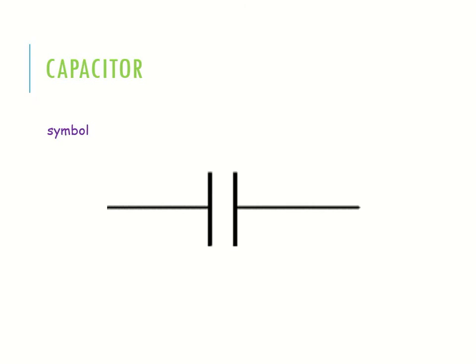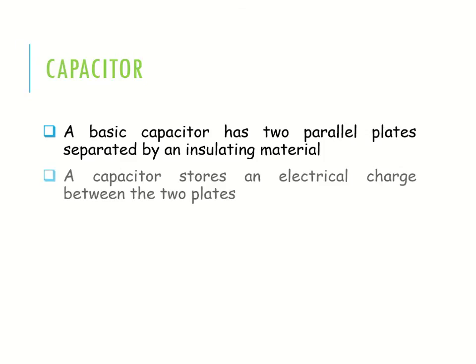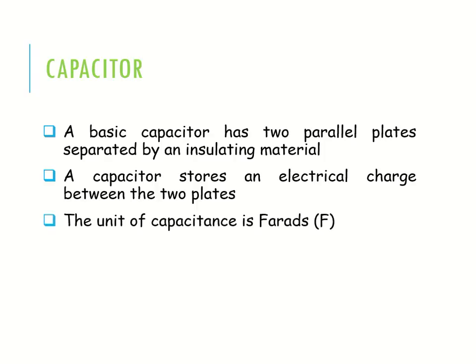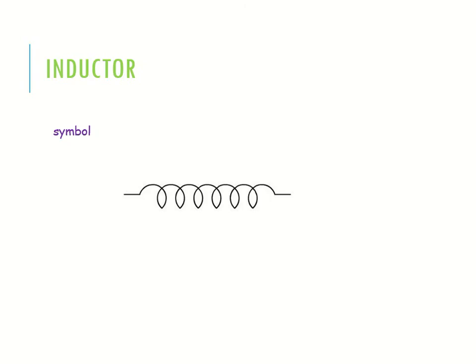Now, capacitor — this is the symbol of a capacitor. A basic capacitor has two parallel plates separated by an insulating material. A capacitor stores an electrical charge between the two plates. The unit of capacitance is the farad. Capacitor values are normally small, such as microfarad, nanofarad, and picofarad.